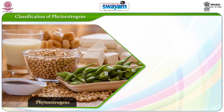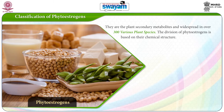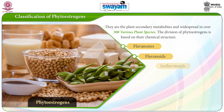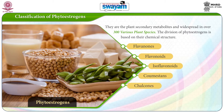Classification of phytoestrogens: Phytoestrogens are the plant's secondary metabolites and are widespread in over 300 plant species. The division of phytoestrogens is based on their chemical structure. The important classes of phytoestrogens are flavanones, flavonoids, isoflavonoids, coumestans, chalcones, stilbenes and lignans. The most efficient group of phytoestrogens are isoflavonoids.